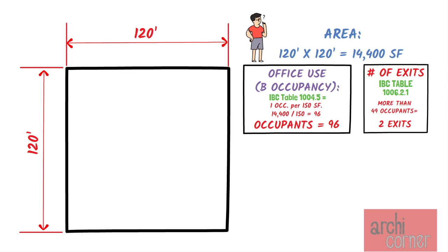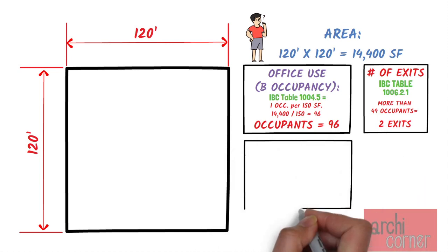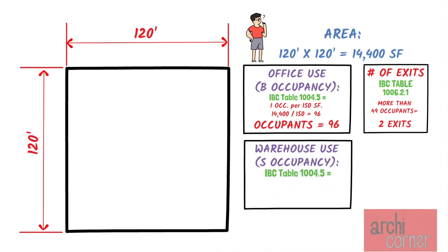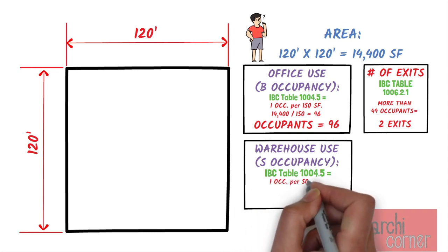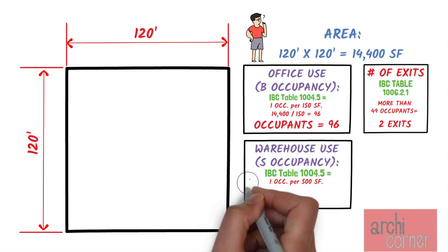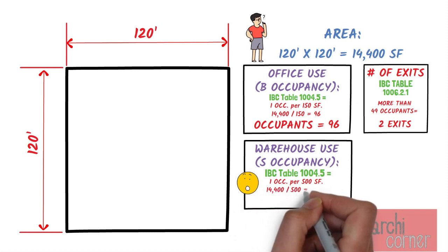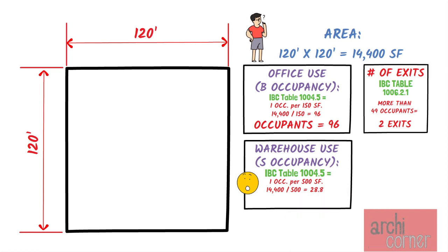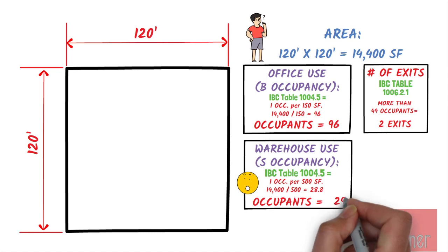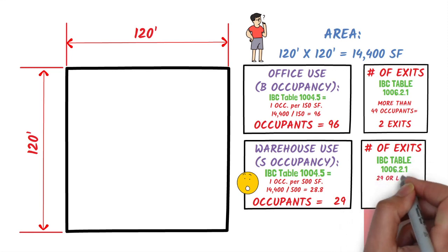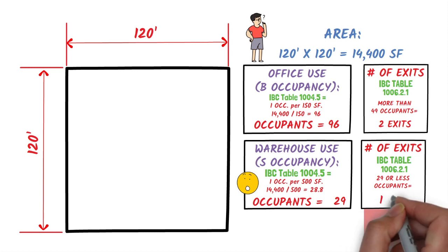However, occupant load alone doesn't always give you the right answer. If this exact same space was used for warehouse, the occupant load will change. The IBC requires the occupant load for warehouses to be determined at one occupant for every 500 square feet — a huge difference, cutting the occupant load to less than a third of office space. Doing the math: 14,400 divided by 500 equals 28.8, which rounds up to 29 occupants. Per IBC Table 1006.2.1, this space has 29 or fewer occupants and will therefore only require one exit if we base it solely on occupant load.